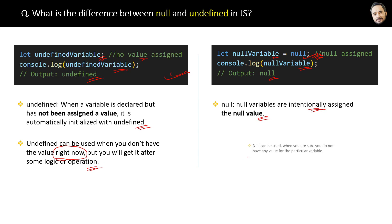Then null can be used when you are sure you are not going to get any value for the variable soon. So that is the differences between them.